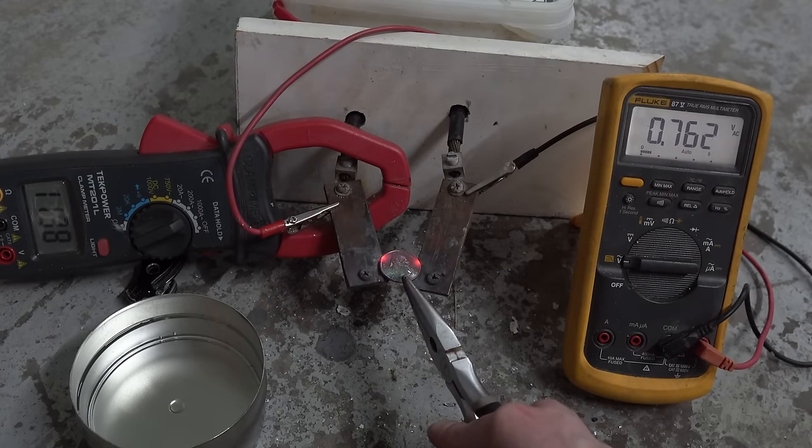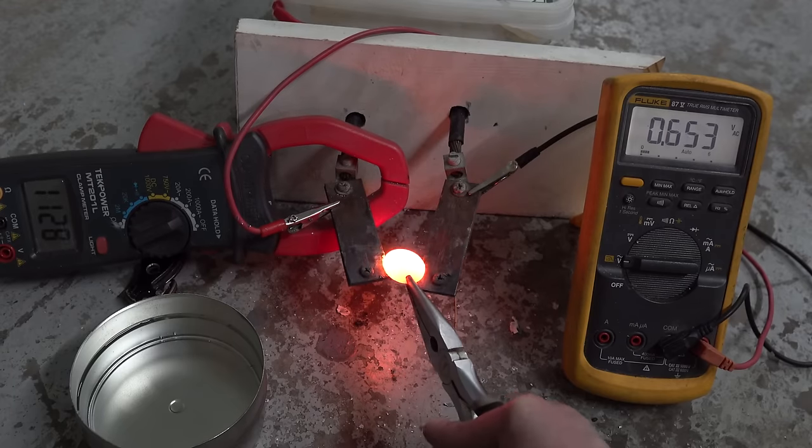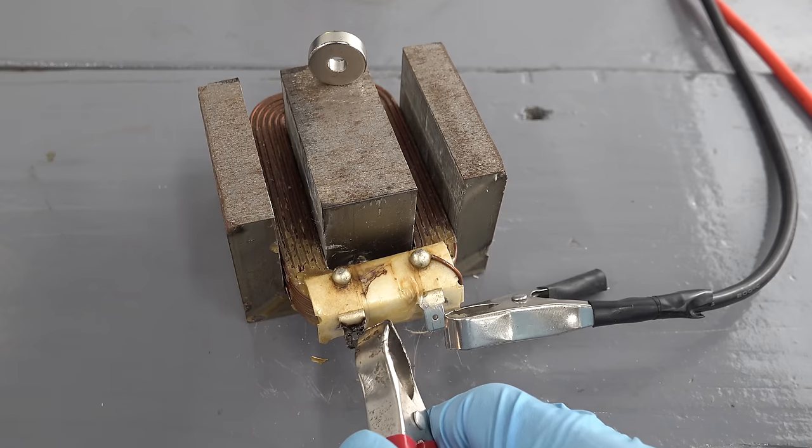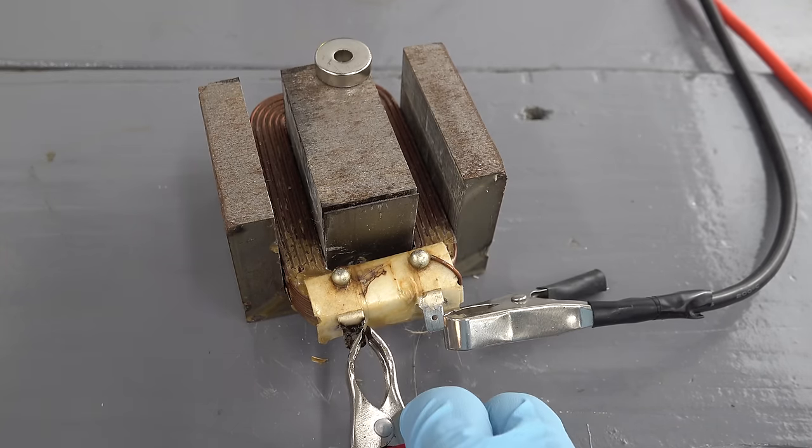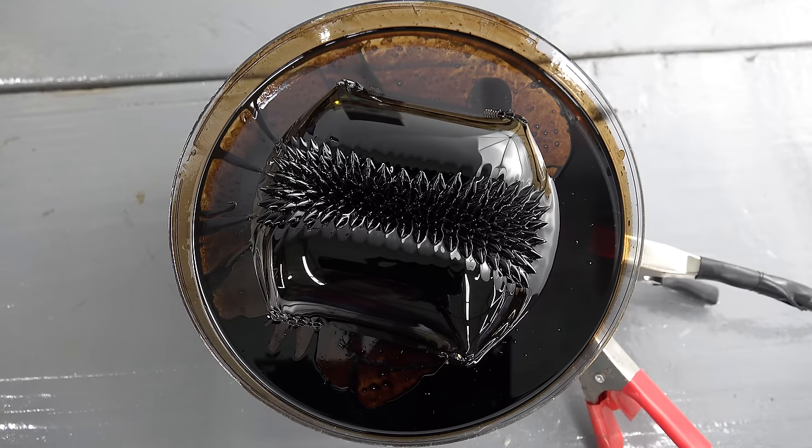Of course, just because these low voltage high current sources can't shock, doesn't mean they're completely safe. They can still burn you by simply heating things up. It's also possible to get shocked indirectly, like by rapidly disconnecting them from an inductive load like this electromagnet, because you get a big voltage spike by doing this.